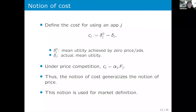By transforming to this framework, we can define the consumer's cost for using an app. This cost is defined by the difference between the mean utility achieved at zero price and zero ads, and the actual mean utility under the optimal combination of price and advertisement that achieves delta_j. If there is no advertising and only price competition, this cost reduces to price times the marginal utility of money. This notion of cost generalizes price, allowing us to define a market even when free products exist.